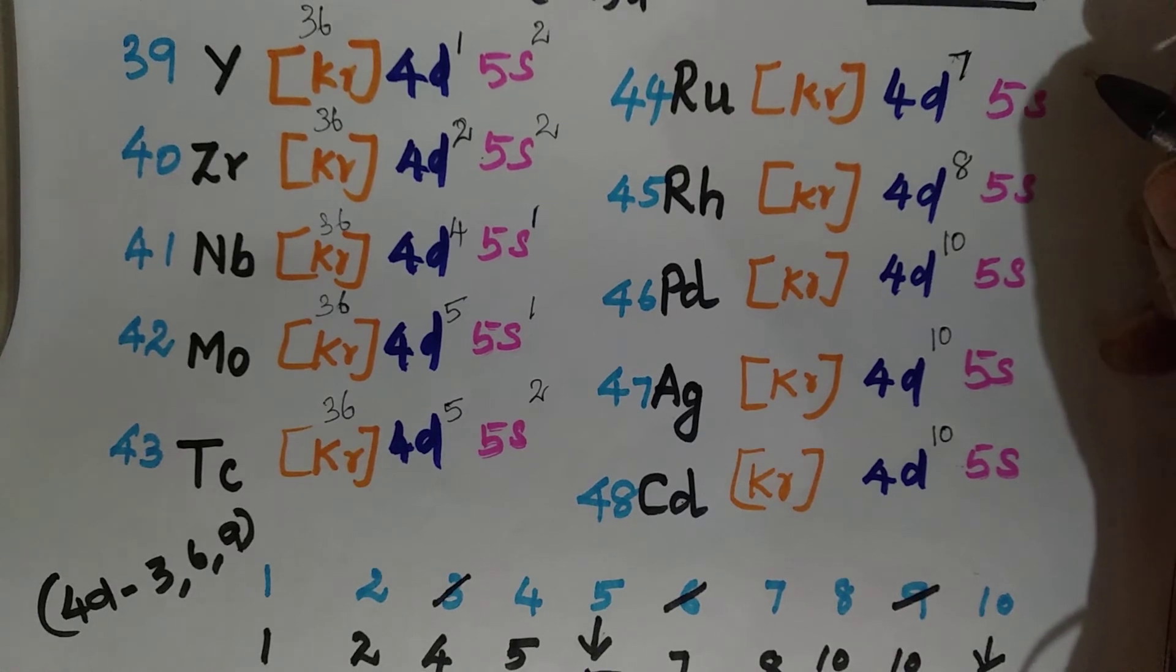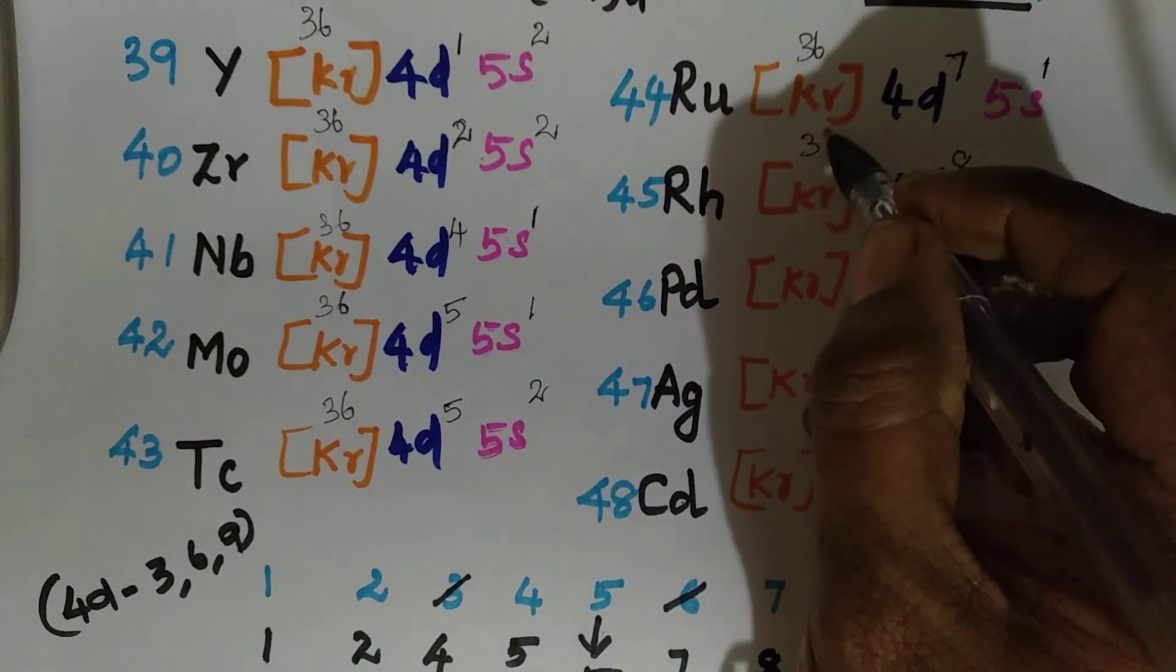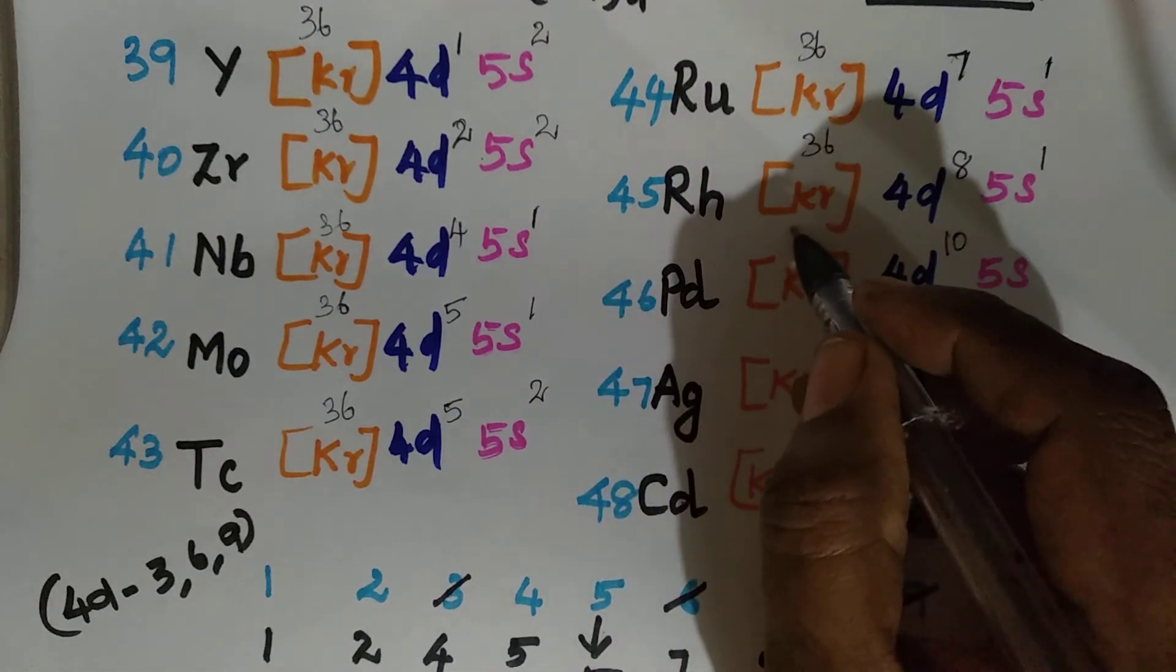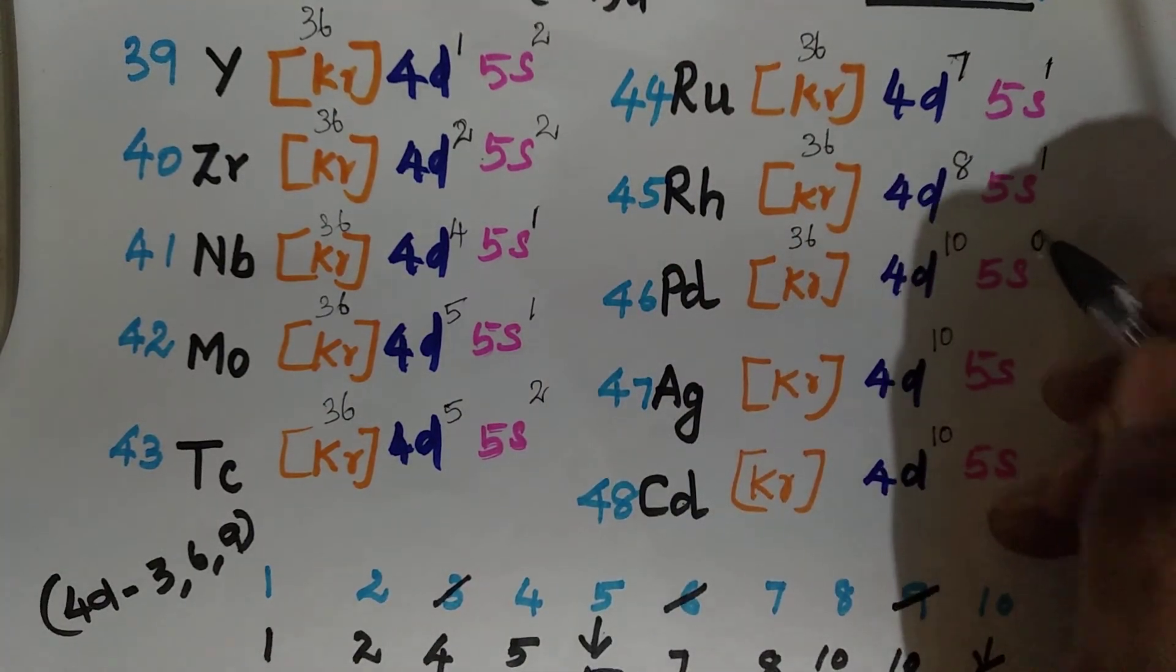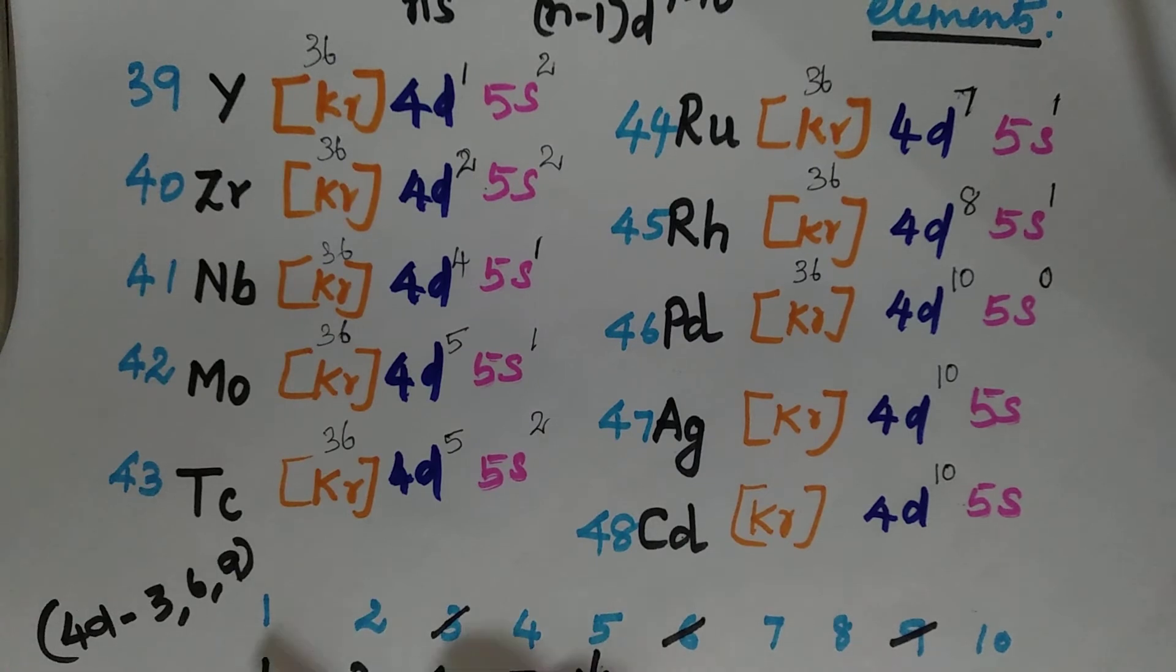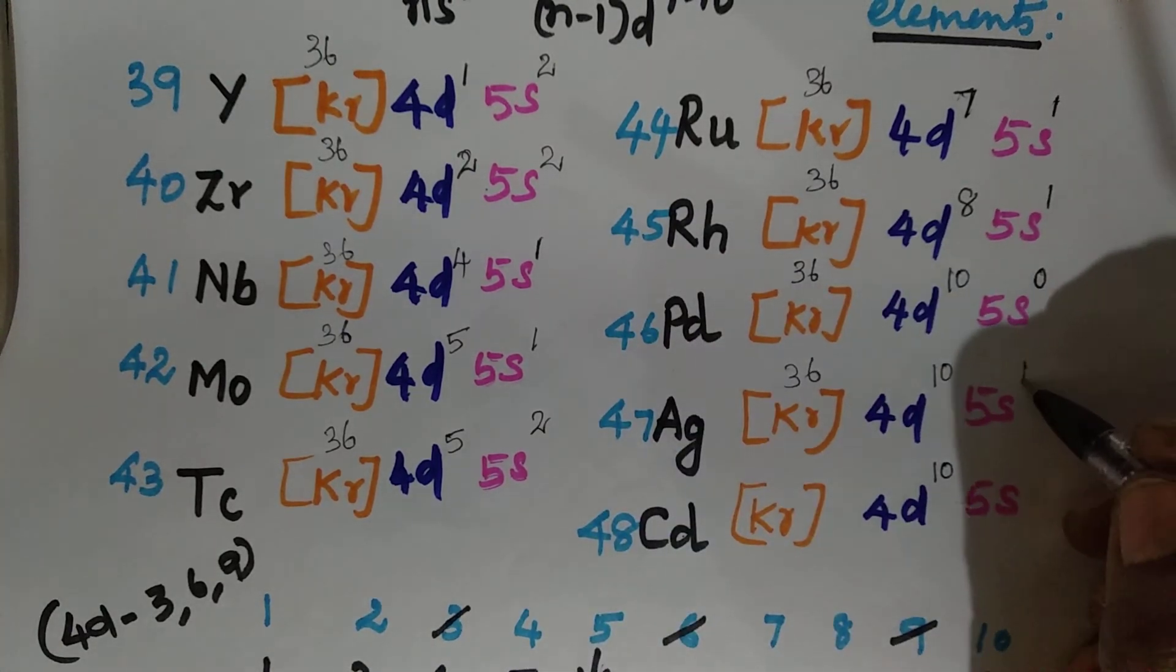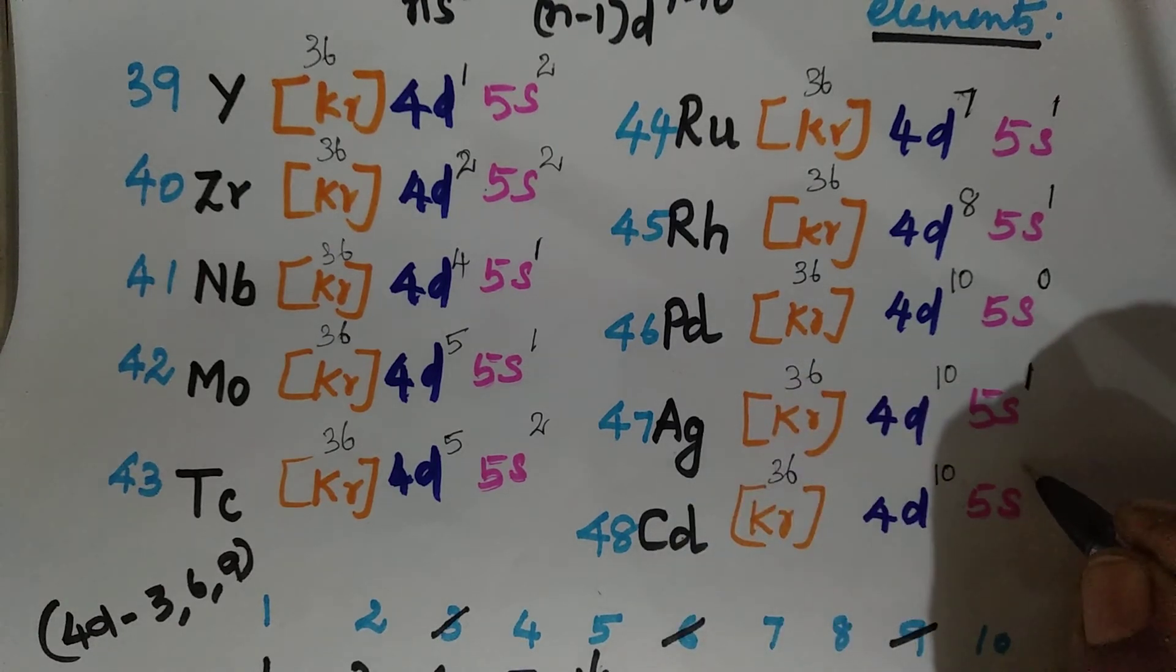Then here for this one, that is ruthenium. 36 plus 7 is 43. 44 minus 43 is going to be 1 only. Now, this rhodium. 36 plus 8 is 44. 45 minus 44 is going to be 1 only. Then this is palladium. 36 plus 10 is 46. 46 minus 46 is 0. So we are getting 0 also for some of the S shells. So that is the reason we are writing n is 0 to 2. It may come 0 or 1 or 2. Now the next one, silver 47. This is 36 minus 10, this is 46. 47 minus 46 is 1. Last one, 48. 36 here. 36 plus 10 is 46. 48 minus 46 is going to be 2.